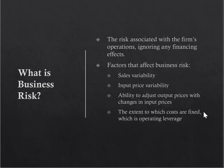Business risk is the risk associated with the firm's operations ignoring any financing effects. Factors that affect business risk include sales variability and input price variability — how much volatility you see on the operational side, and whether inputs like precious metals, aluminum, or oil vary considerably from month to month or day to day. Also important is the ability to adjust output prices when input prices change — what's your price elasticity in the market?